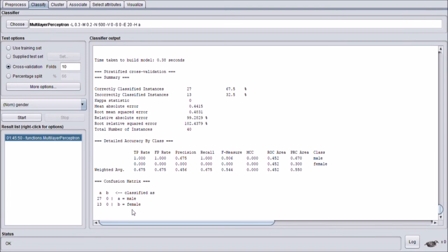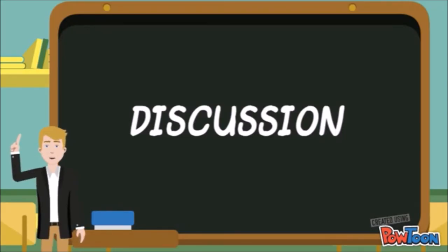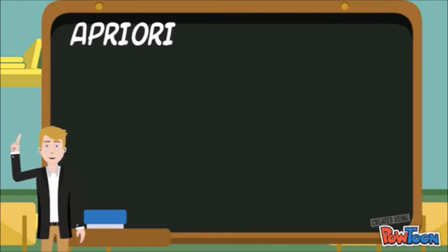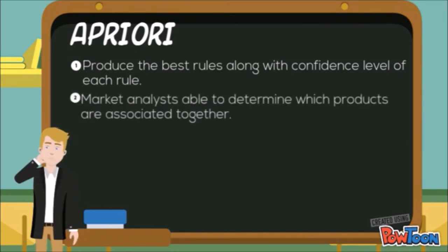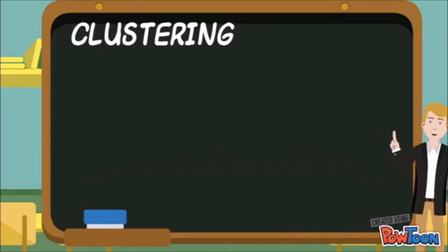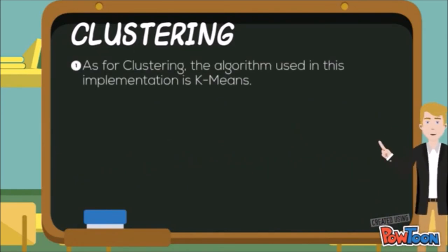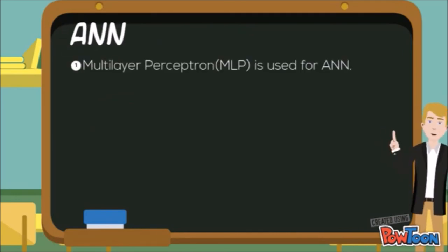The third result is the confusion matrix in ANN, which describes the performance of classification on the dataset. The A-priori algorithm produces the best rules along with the confidence level of each rule; through these rules, market analysts are able to determine which products are associated together and plan to market them to increase sales. As for clustering, the algorithm used in this implementation is K-means, and the results show clusters indicating that different demographics have different preferences towards products.